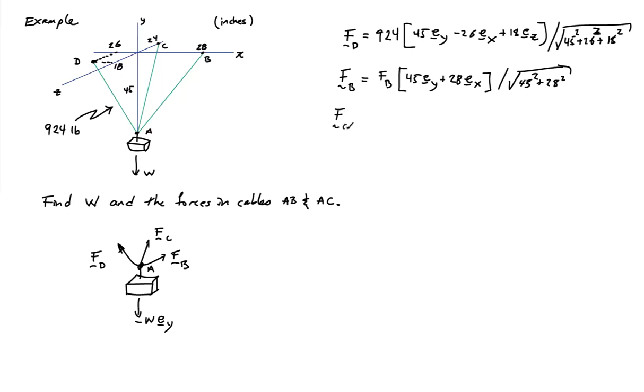The force in cable C has some magnitude, I'll call that FC, and its orientation is 45 inches in the Y direction. It has no orientation in the X direction, but minus 24 in the Z direction, normalized by the square root of 45 squared plus 24 squared. That gives me the expressions for the forces, and the other force W we have is minus W EY.